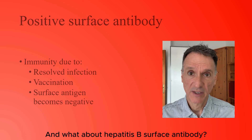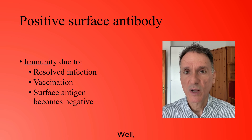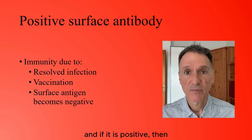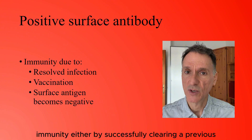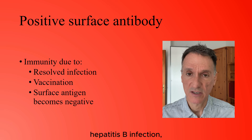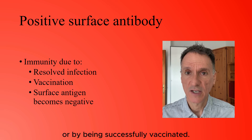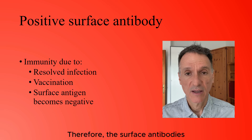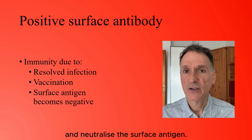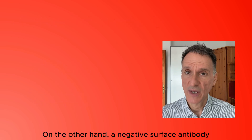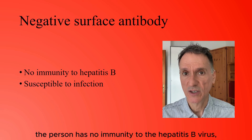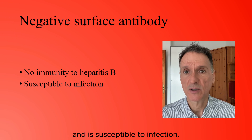What about the hepatitis B surface antibody? The surface antibody is produced by the immune system, and if it is positive, this usually indicates that the person has developed immunity, either by successfully clearing a previous hepatitis B infection or by being successfully vaccinated. Therefore, the surface antibodies provide immunity against future infections and neutralize the surface antigen. A negative surface antibody indicates that the person has no immunity to the hepatitis B virus and is susceptible to infection.